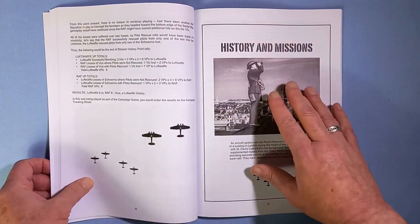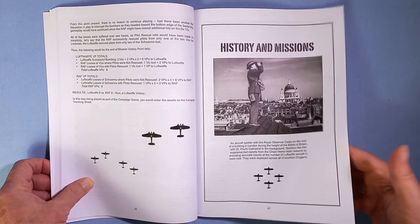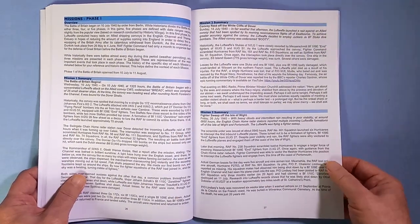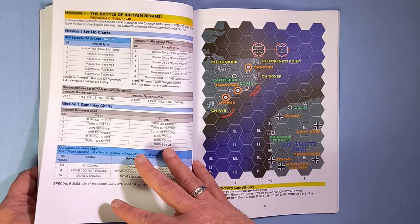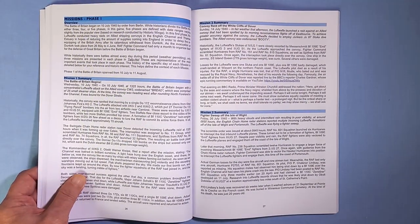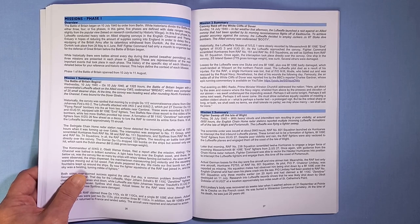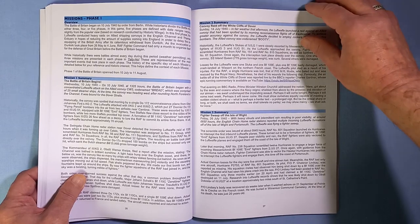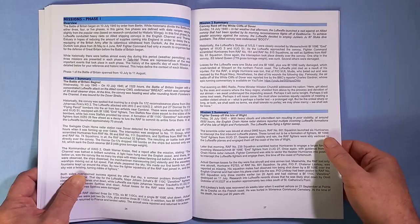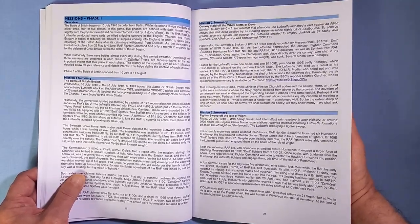The missions. And then we are into the missions. What this game does is split the 15 missions into five phases of three missions each. This of course is only used if you're playing the campaign. You can of course play missions on their own.